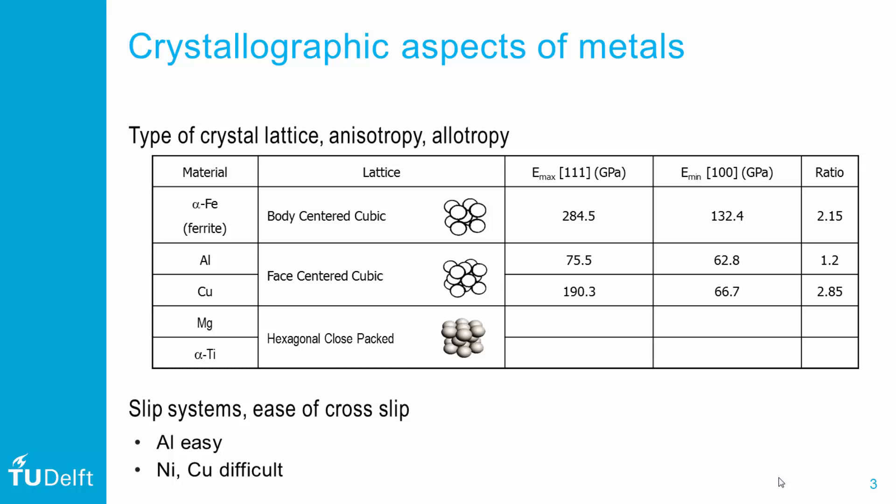Slip systems relate to the crystallographic planes, but the ease of slip is greatly affected by how easily cross-slip can occur. For aluminium, this is for example much easier than for nickel or copper.